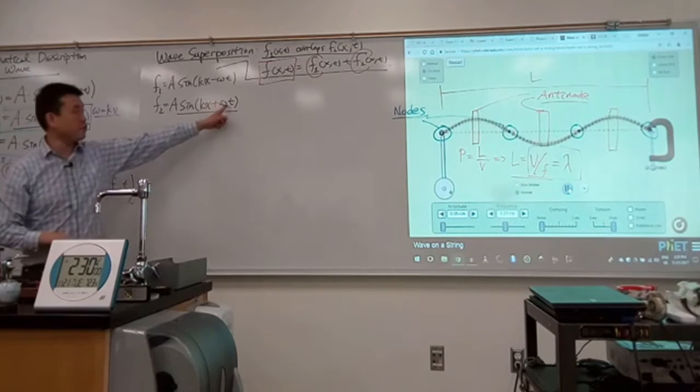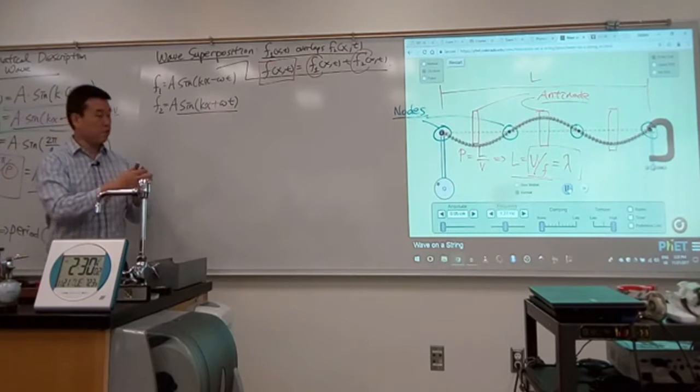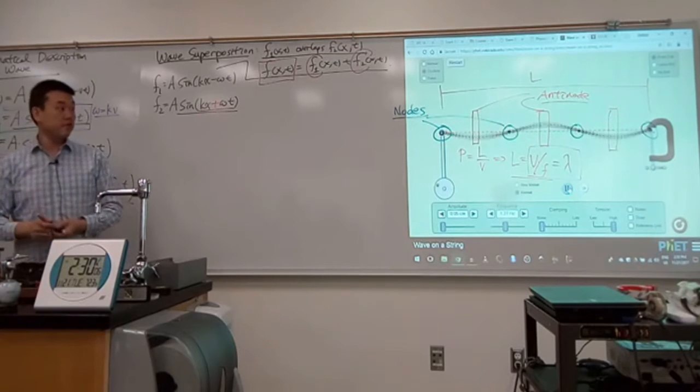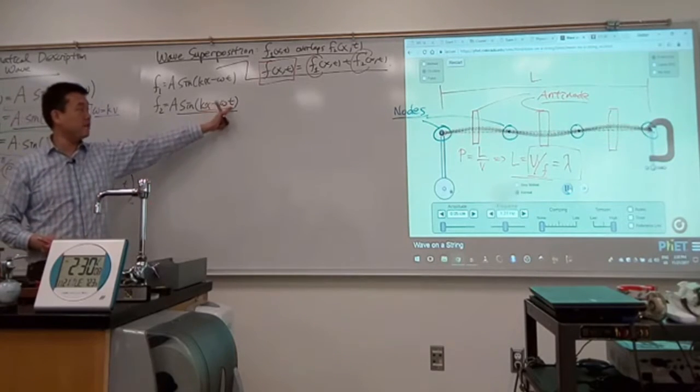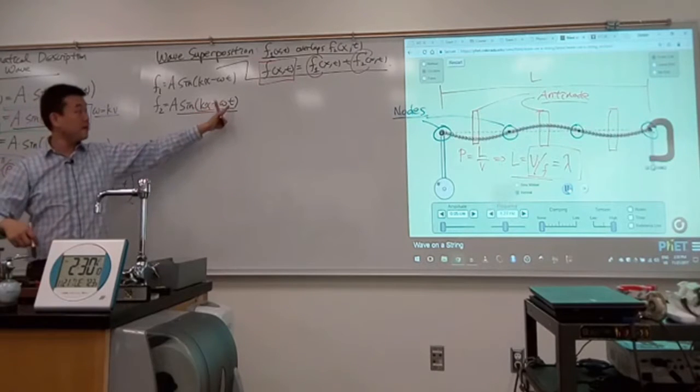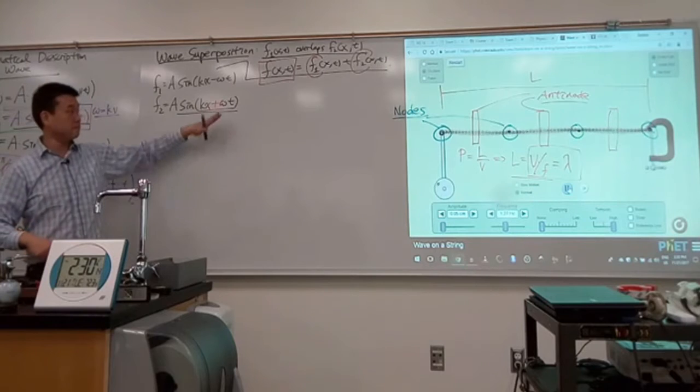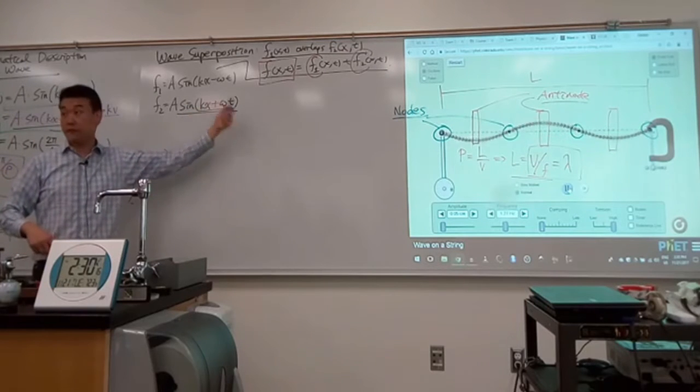One way to see it is that as you increase time t, to keep this quantity kx plus omega t constant, so you're trying to track the wave at the same point in each cycle, as you increase t, x has to decrease. That's why this describes a wave that's moving from right to left.